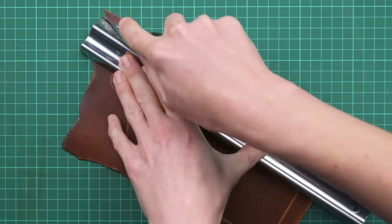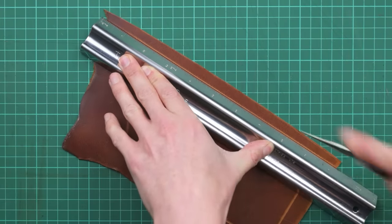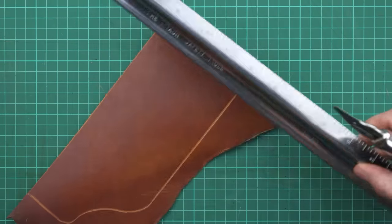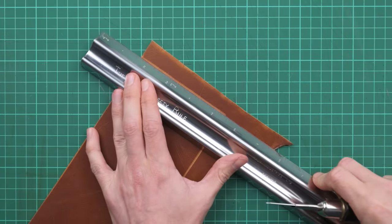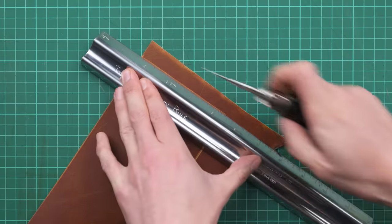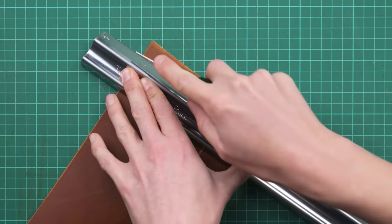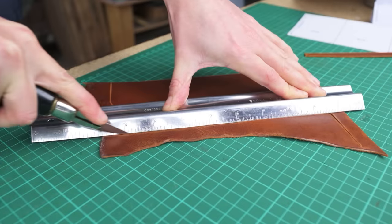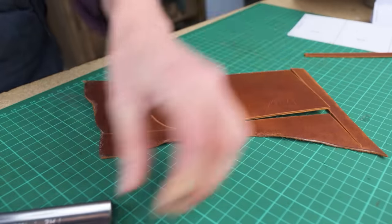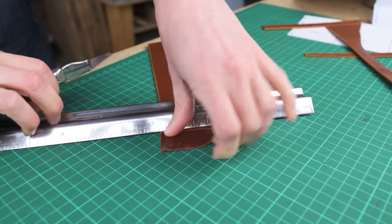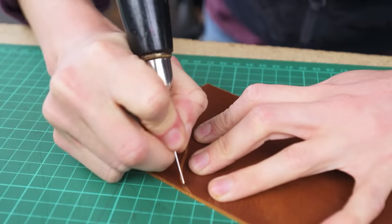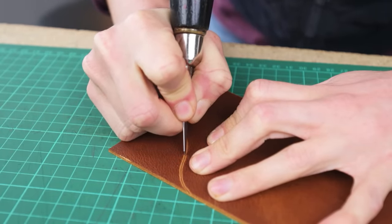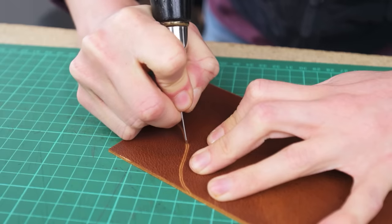And once we have our pattern transferred onto our leather we can then cut this out. This sort of curved line of the pattern is the hardest to cut out. So just take your time here and do this nice and slowly and accurately.